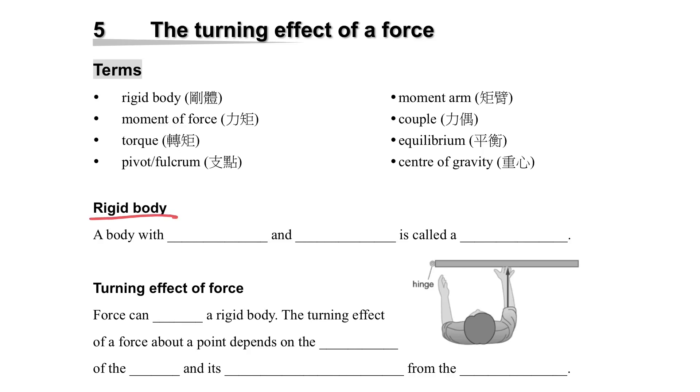This chapter is about the turning effect of a force. First, we have to understand the term called rigid body. Actually, a rigid body is a body with a fixed shape and a fixed size. We call it a rigid body.